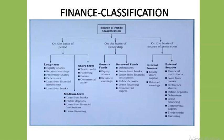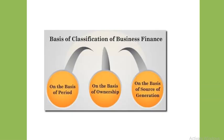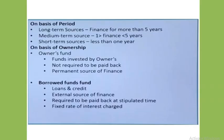The various sources of funds can be broadly classified on the basis of three categories. First is on the basis of period. Second, on the basis of ownership. And third is on the basis of source of generation. On the basis of time period, the different sources of finance can be categorized into three parts: first, long-term sources; second, medium-term sources; and third, short-term sources.